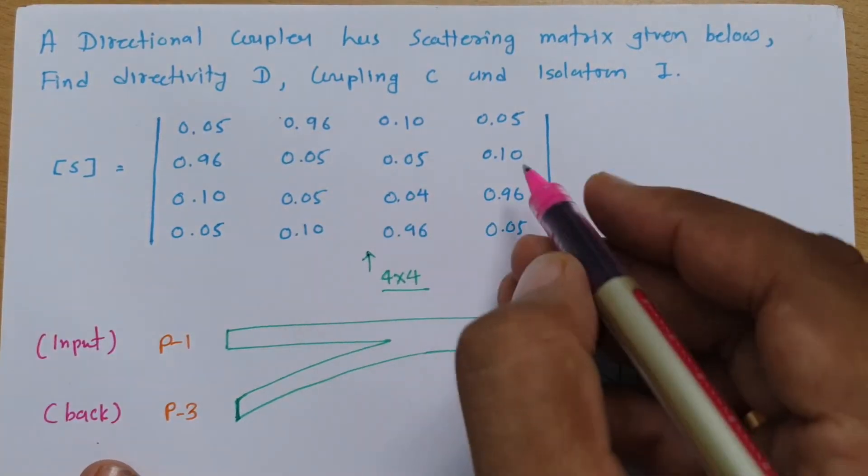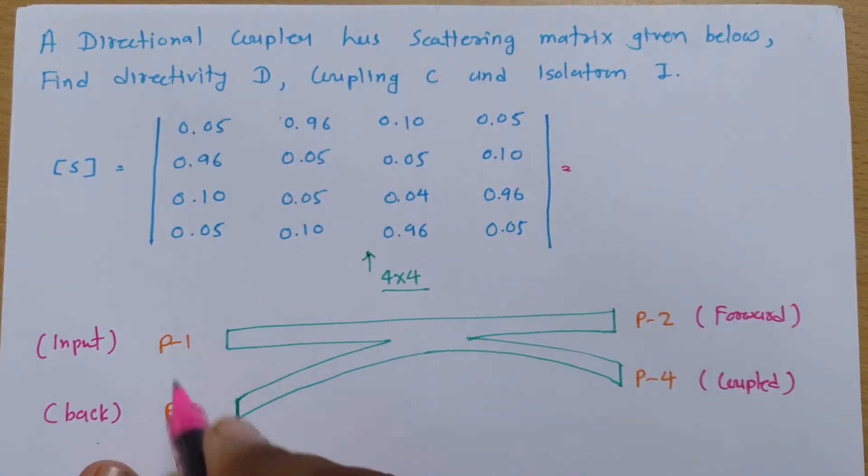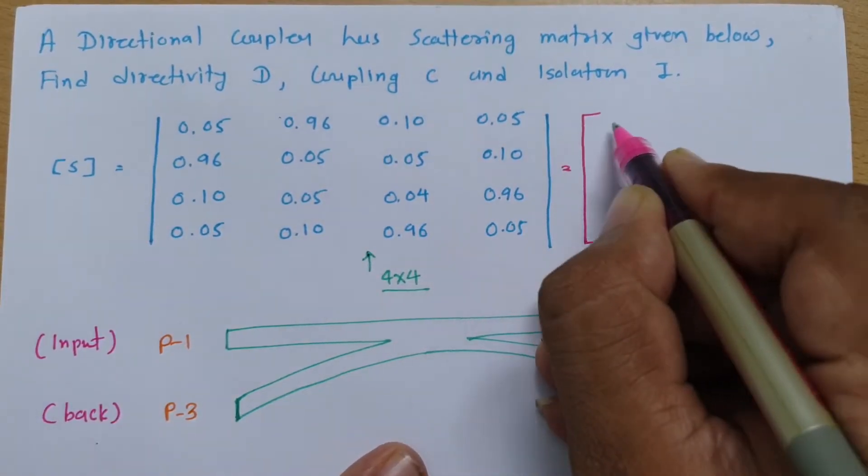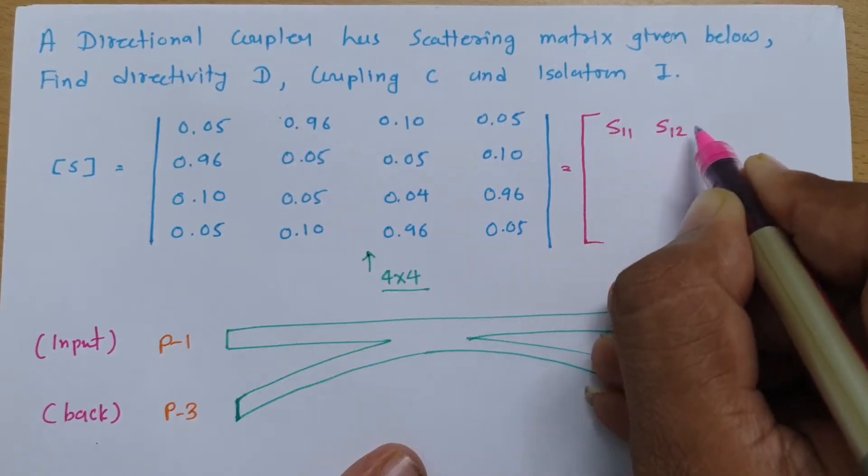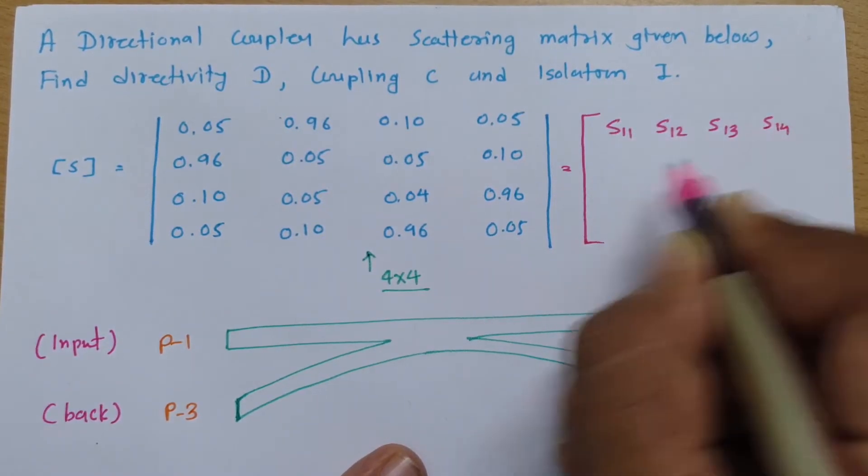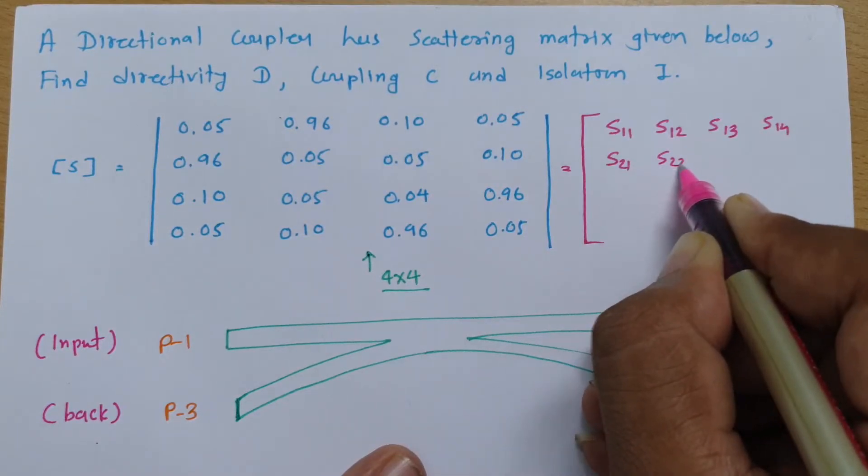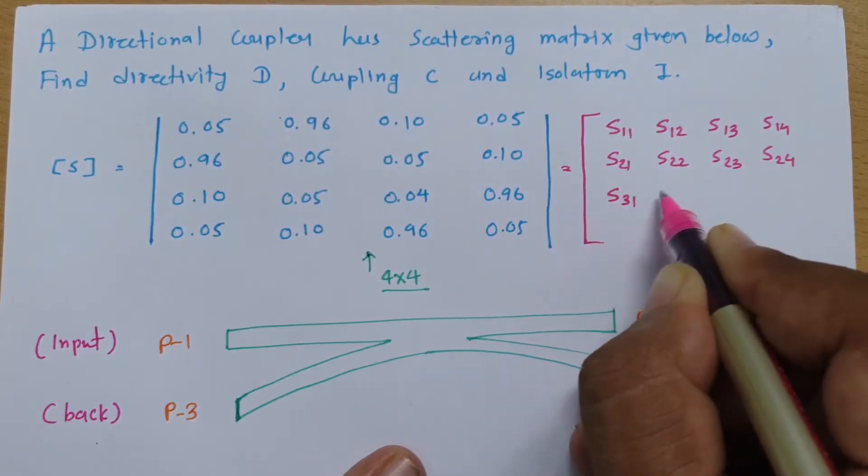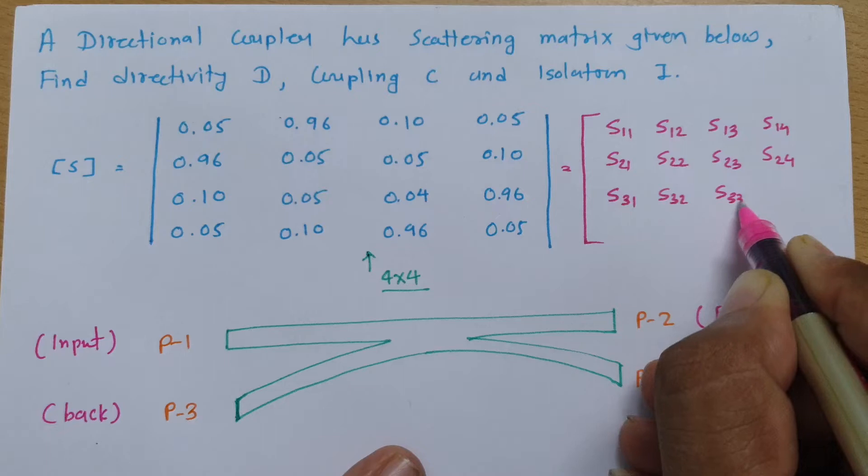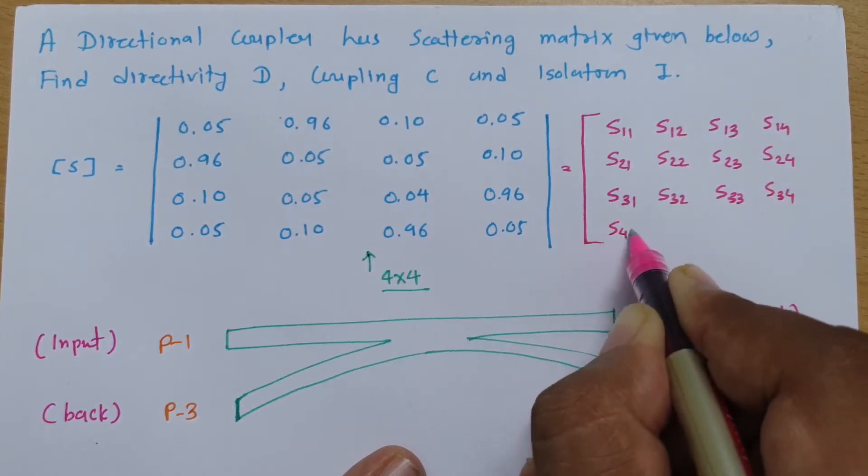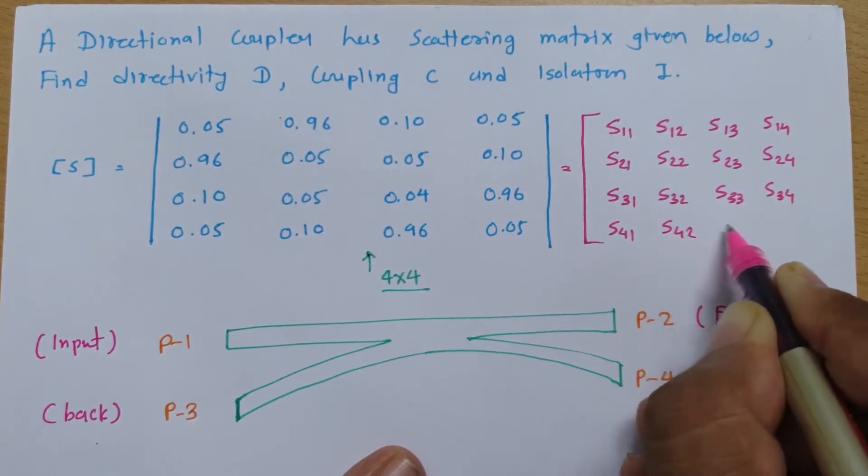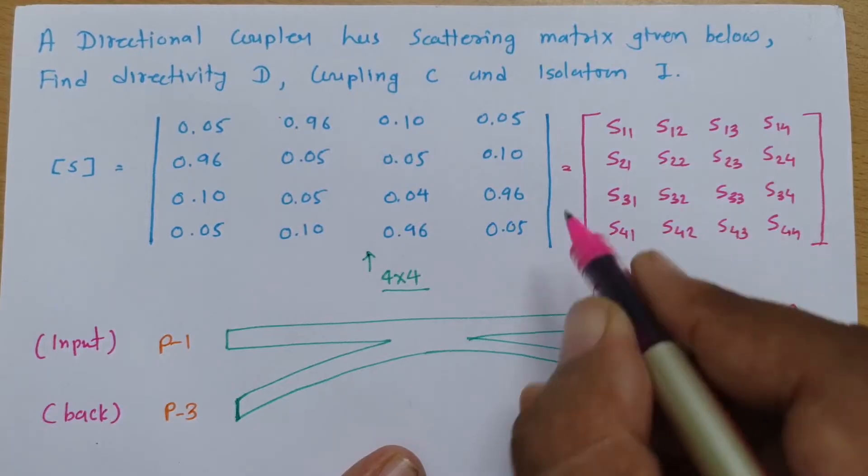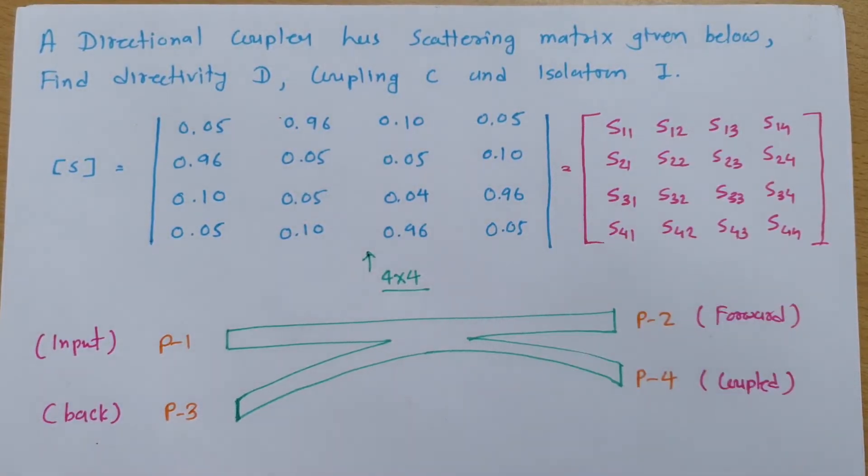We can compare this scattering matrix by having these 4 ports 1, 2, 3, 4 as S11, S12, S13, S14, S21, S22, S23, S24, S31, S32, S33, S34, S41, S42, S43, and S44. That is how we can compare this matrix.